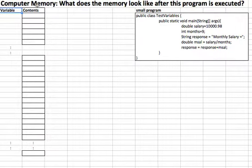So here's the task. What does the memory look like after this program here is executed? Okay, let's go line by line then. We know that this is our program name. We know that this is a method that's going to get executed. Let's go here.